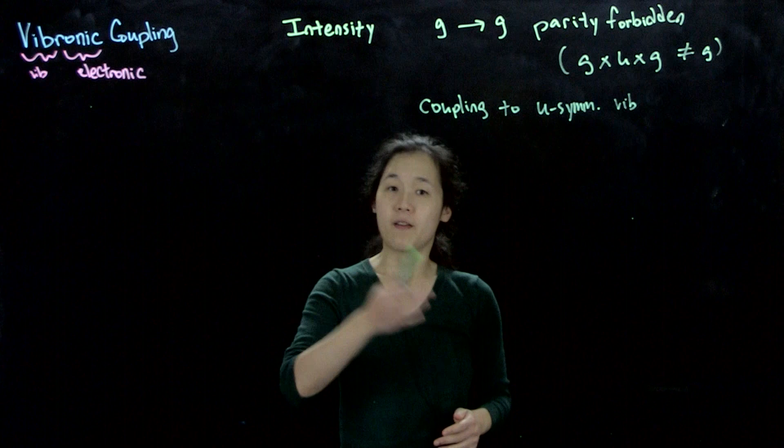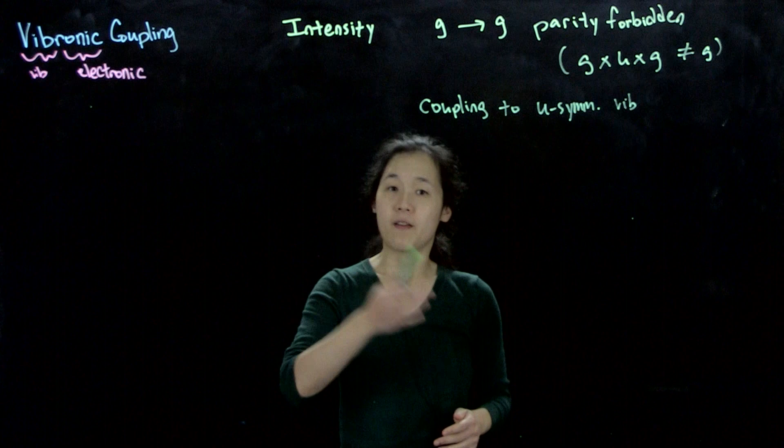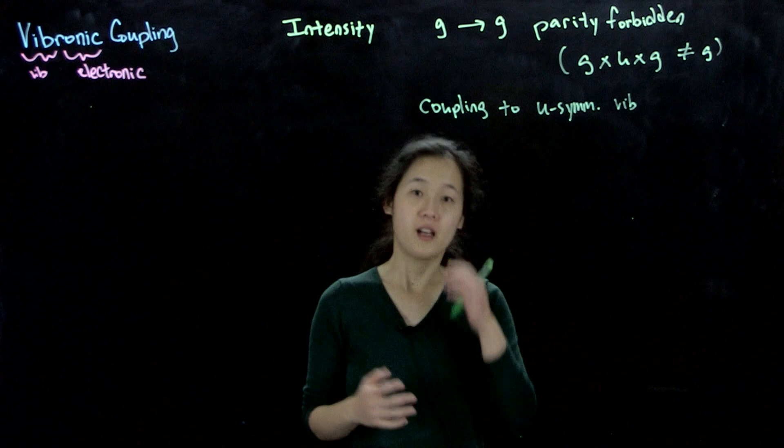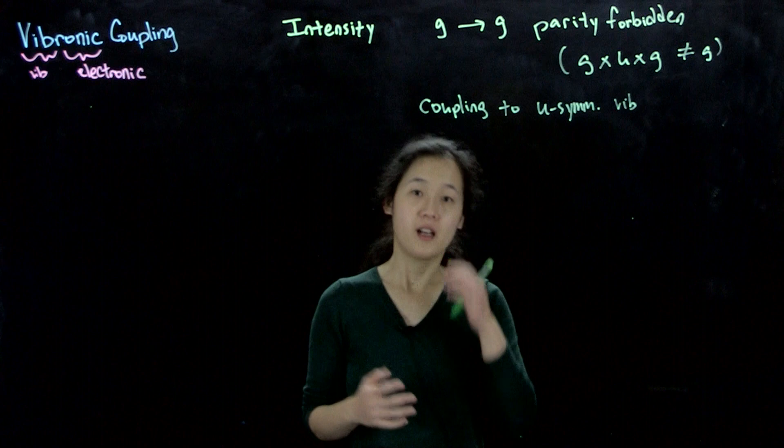One way you can tell if it's vibronic coupling is that it's temperature dependent. Temperature will change which vibrational levels we're occupying — ν = 0, ν = 1, etc. — and so that would change the amount of coupling we get.